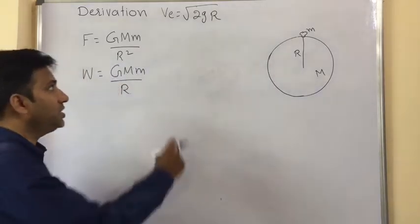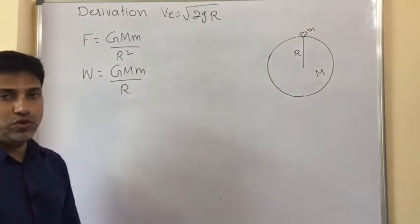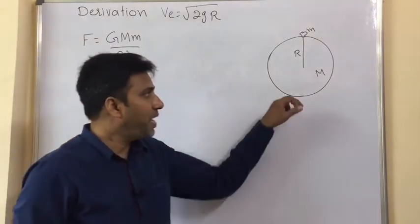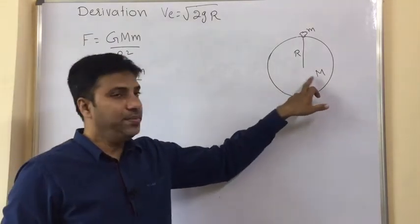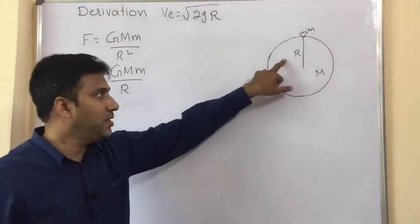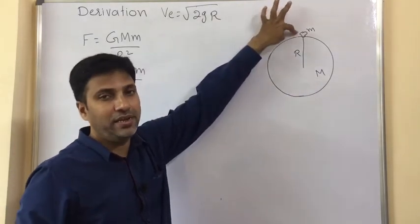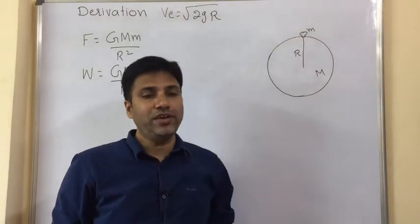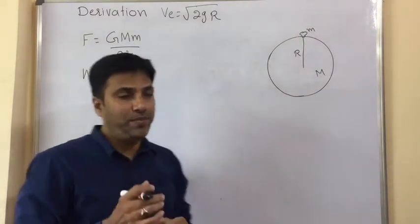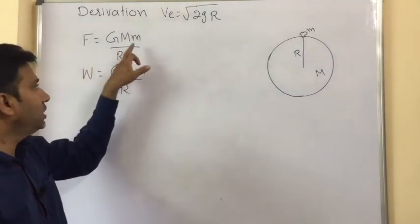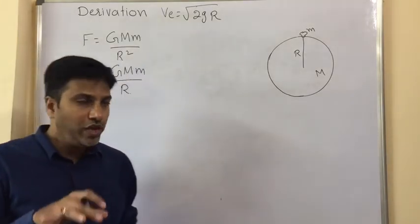The final equation of escape velocity is v_e equal to under root 2gR. Consider a planet of mass M, radius capital R, for example Earth. On this planet, an object of mass small m is kept. Then from universal law of gravitation, the force of attraction between them is given by F equal to GMm by R square.